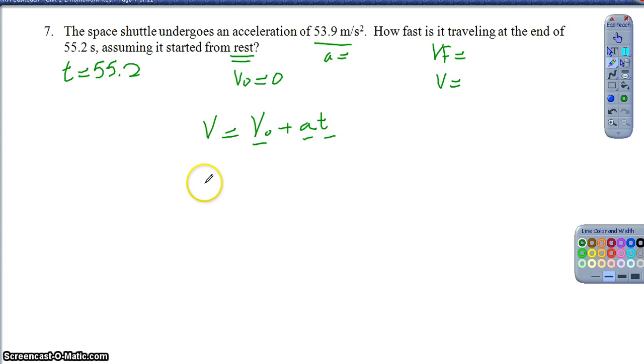So my final velocity is going to equal my initial, which was zero, plus the acceleration of 53.9 meters per second squared times the time of 55.2 seconds. And I do want you to every once in a while notice units. I know I don't always follow these throughout, but it is good to do so because if we think about that, if I have meters per second squared times seconds, one of those seconds are going to cancel out, and then that's going to leave us with meters per second, which is what we want for velocity.